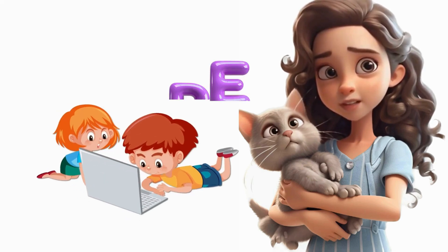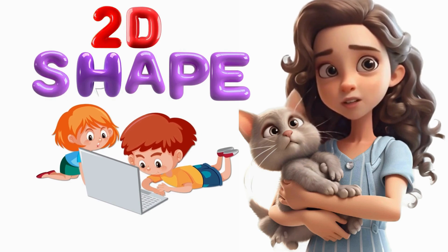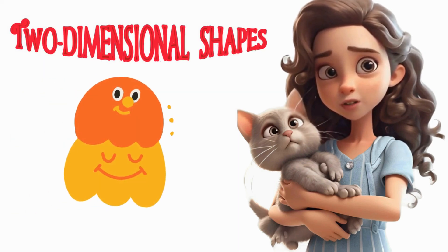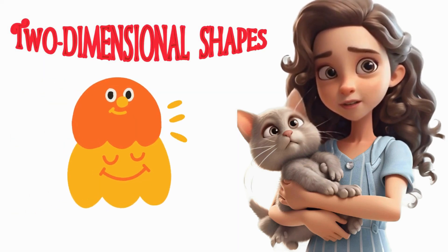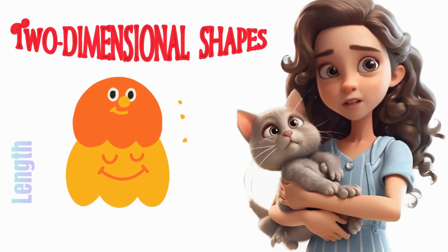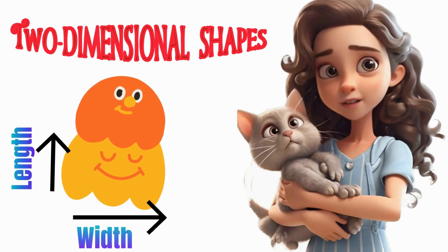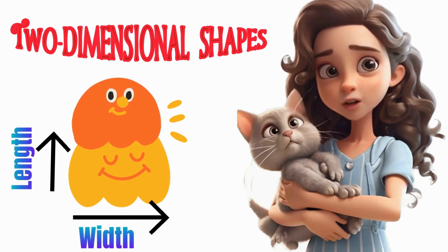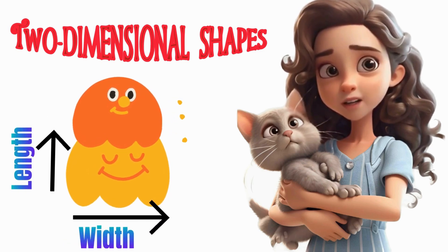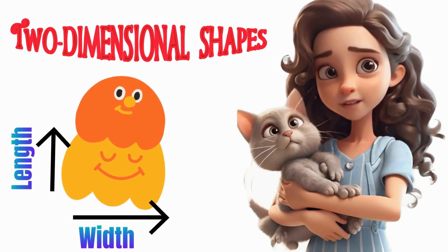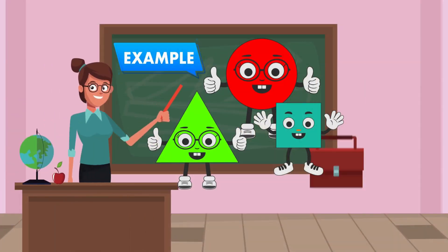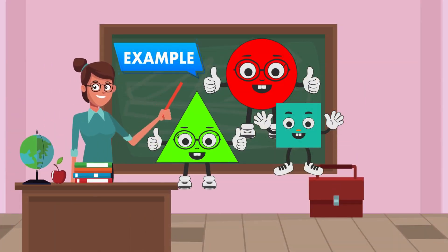First up, let's talk about 2D shapes. These are two-dimensional shapes, which means they have only length and width, like drawings on paper. You can't hold them in your hands because they're flat. Here are some examples of 2D shapes.